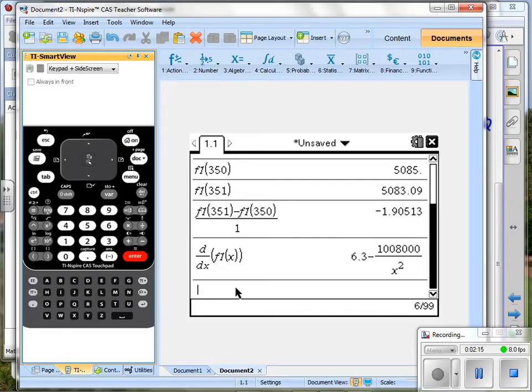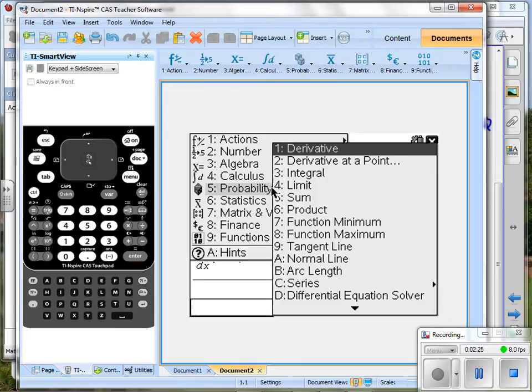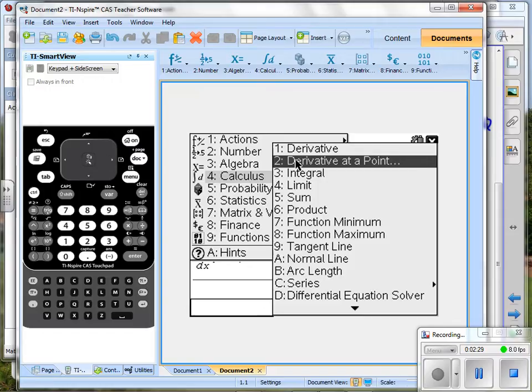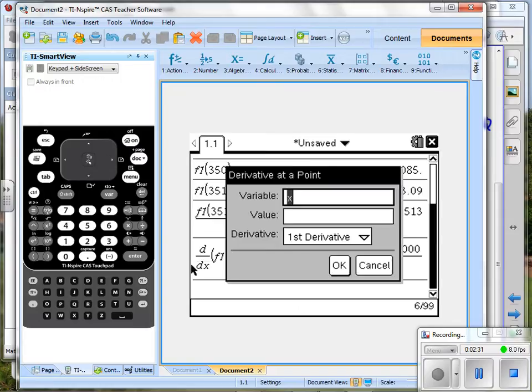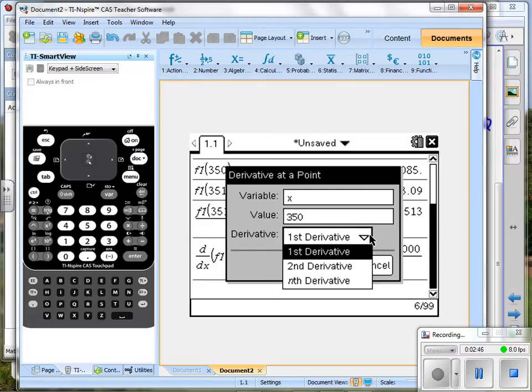So now I have the derivative, and I can do a few things. I could just come up here and replace X with 350. There is also, this is a new thing for the new operating system. The derivative at a point, have you used that? Maybe some of you have looked at it. And so let's see here. The variable is X. The value is 350. Let's see if we get the answer we want. We want the first derivative as opposed to one of the other derivatives we could be looking at.